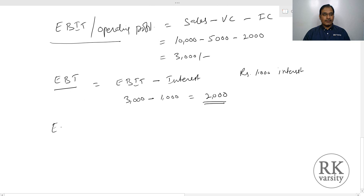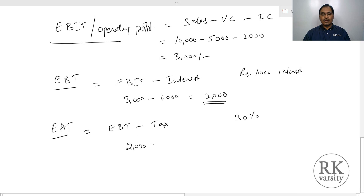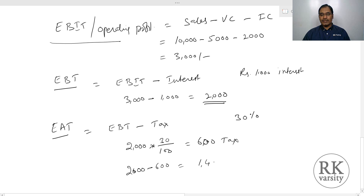Then you have earnings after tax. Earnings after tax equals earnings before tax minus tax amount. Let us say this company is in a tax bracket of 30%. Earnings before tax is Rs.2,000, so 30% tax equals Rs.600. Therefore, earnings after tax is Rs.2,000 minus Rs.600, which equals Rs.1,400.